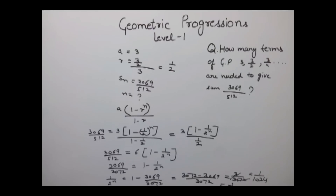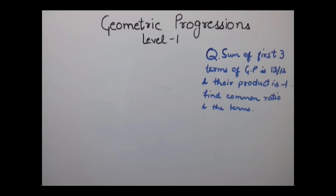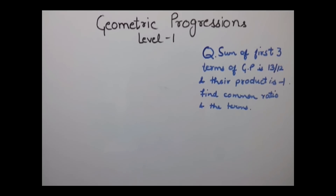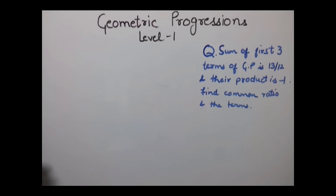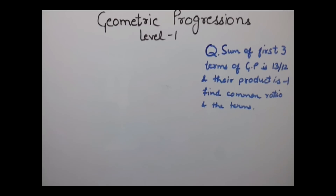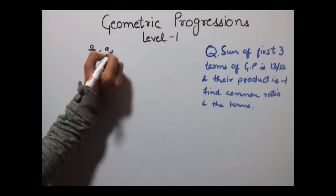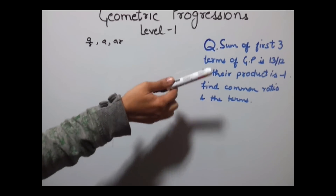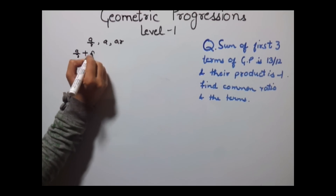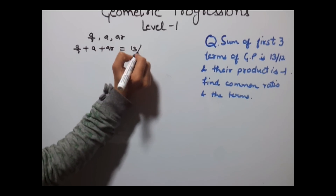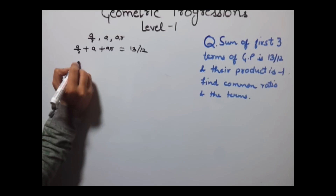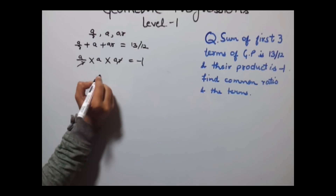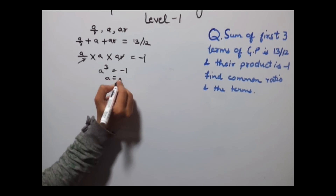The next example: the sum of the first 3 terms of a GP is 13/12 and their product is -1. Find the common ratio and the terms. As discussed, we assume the 3 terms as A/R, A, and AR. So A/R + A + AR = 13/12, and (A/R)(A)(AR) = -1, which simplifies to A³ = -1, giving A = -1.